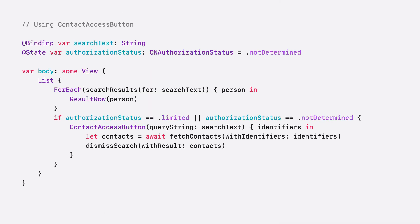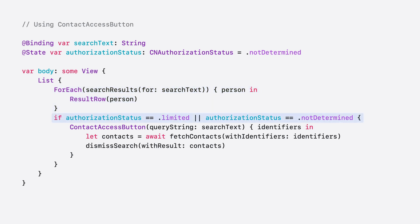Here's an example of how to use the button in an app. It is a simple view for showing contact search results in my app. This view has a binding to the text that was entered into my app's search text field, and it is tracking my app's authorization status. First, I show the results that my app is able to retrieve from its own data store — I'm using a simple for each to do that here. After my app's own results, I conditionally show the Contact Access button, only if my app has the limited or not-determined authorization status. When I initialize the button, I pass in the text that was entered into the search field. Finally, in the callback block, I'll receive an array of contact identifier strings. At this point, I can retrieve the contact details and dismiss my search UI.